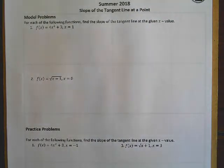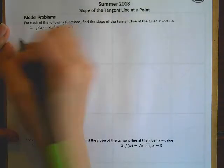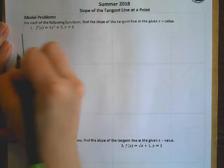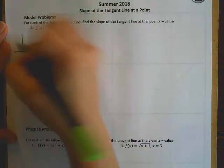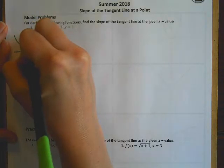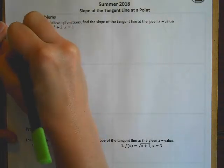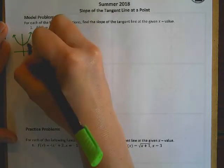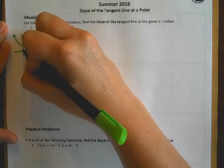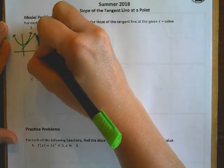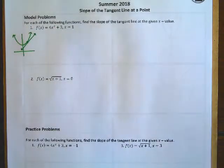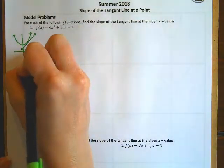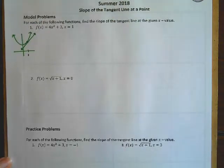And I'm looking at f(x) = 4x² + 3, and I want to find the slope of the tangent line at x = 1. And the first thing that I want us to look at is what this graph would look like, right? Because it's a quadratic that opens up, and it's moved up 3, and has a stretch of 4. And so at x equals 1, what I'm trying to find is the slope of the line that touches the graph at x equals 1. What's the slope of that line when it touches only once?